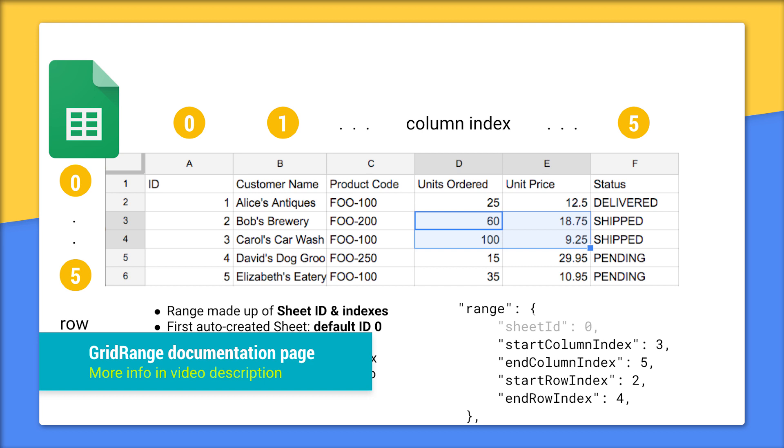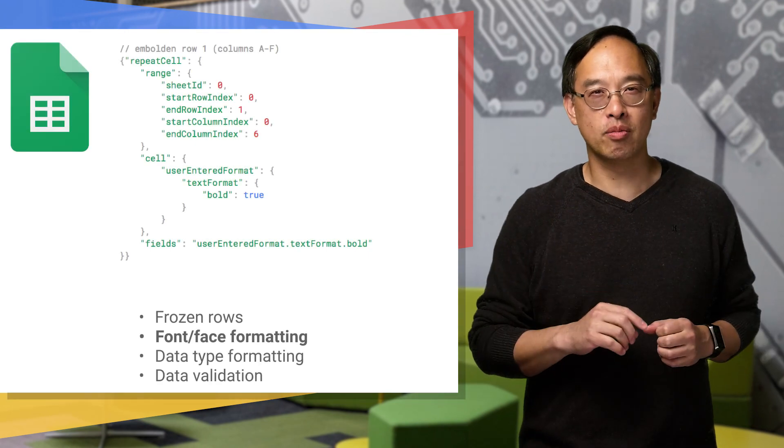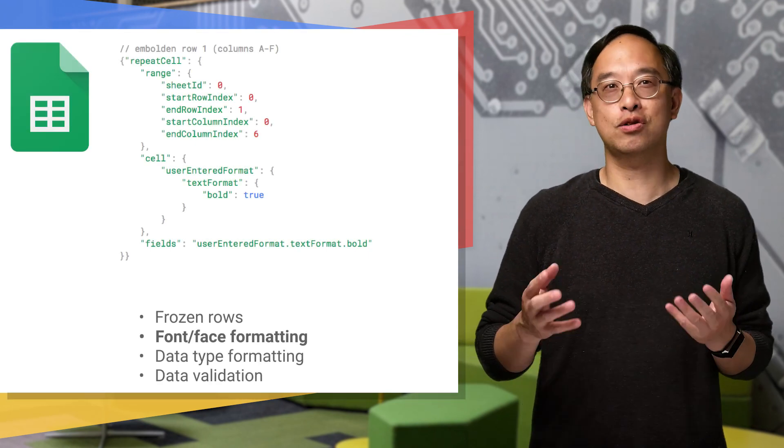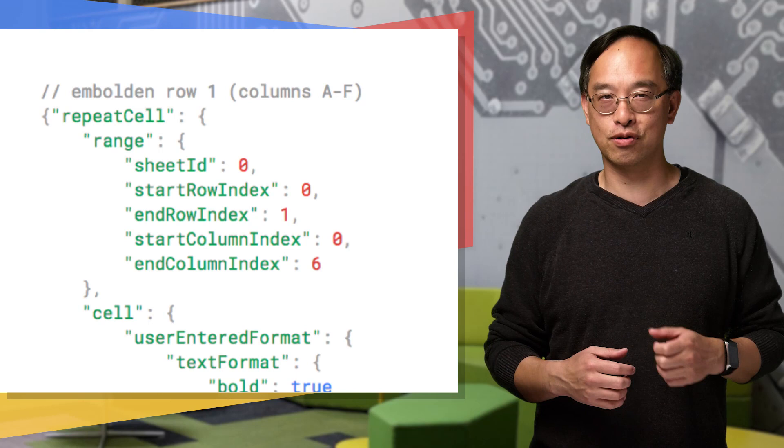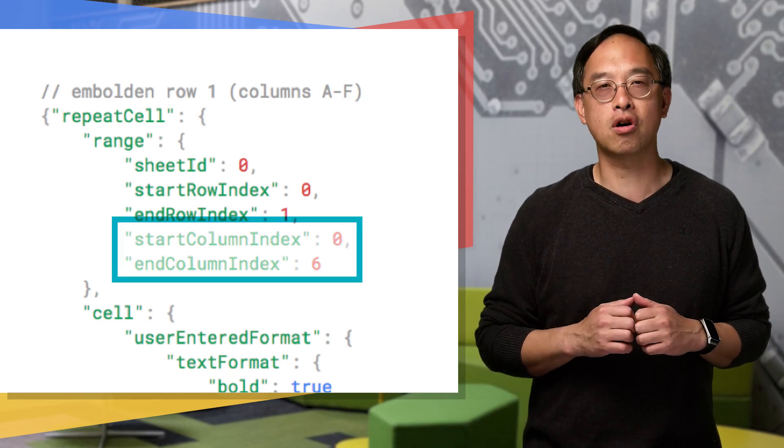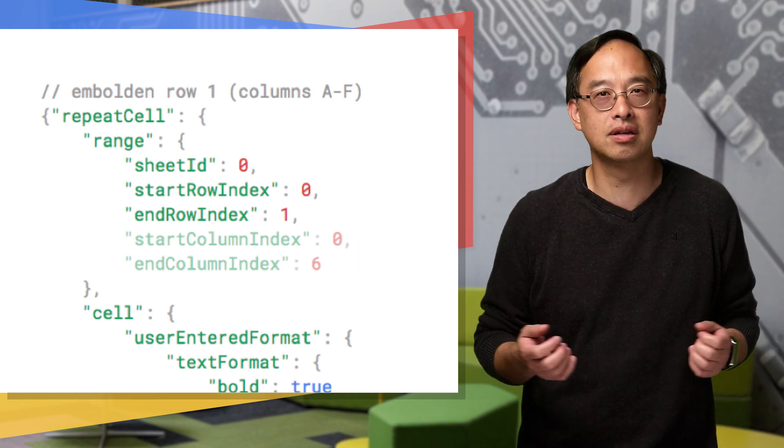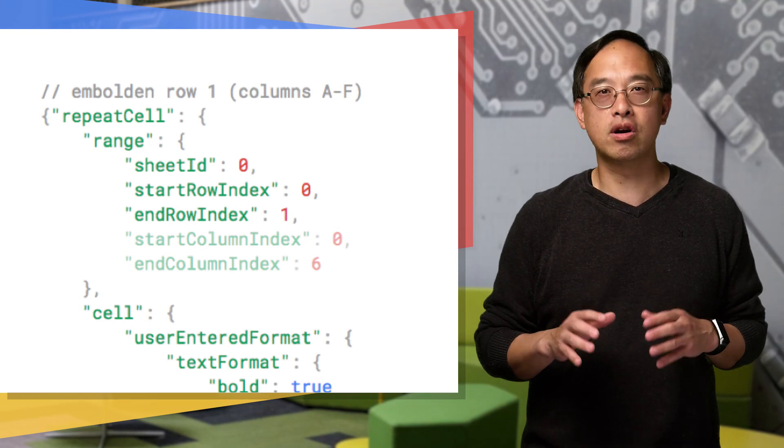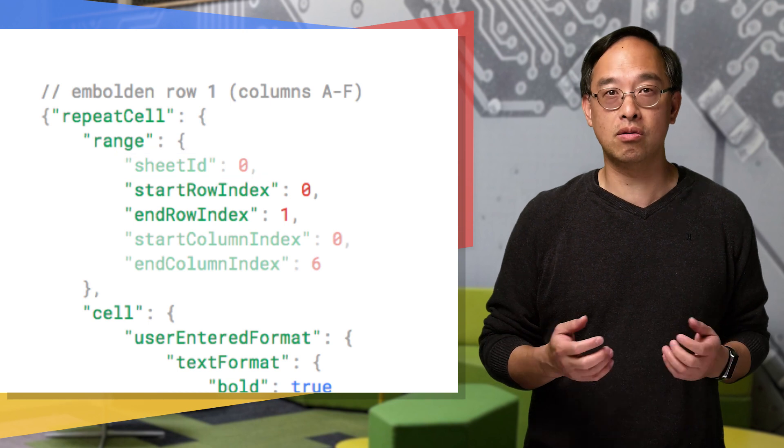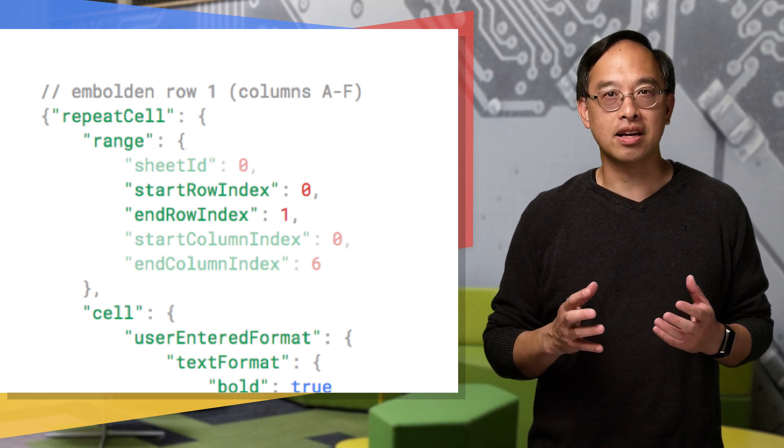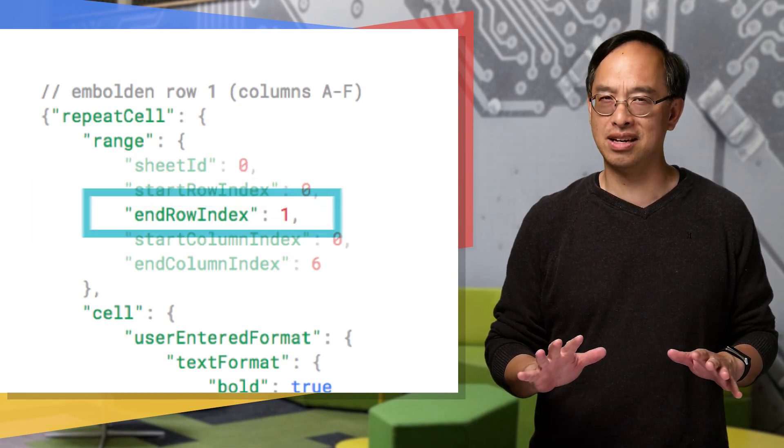Now we can talk about the other three requests, starting with bolding that frozen row. The verb is repeatCell, meaning apply this format to all cells in a given range, which is the first row in the first sheet. Now that you know all about ranges, you can see that these are the correct values representing the first row. However, we recommend you drop both column indexes. Hard coding columns is a bad idea, because if you add more columns, they're not going to be bolded. By leaving them out, the entire row will be bolded, regardless of the number of columns. If you're accessing the first default sheet, meaning its ID is 0, you can leave off the sheet ID too. Finally, all start indices default to 0, so we can also drop startRowIndex. The only one you really need is endRowIndex.